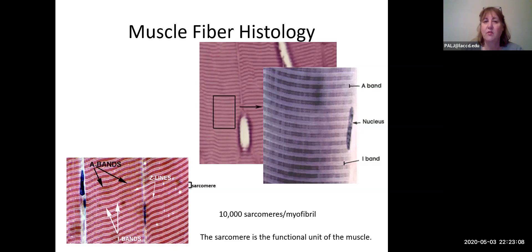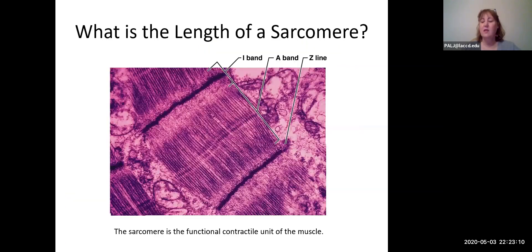Here is what I want you to do next. This is an electron microscope picture labeled with an A band, I band, and Z line. I want you, only using the words A bands and I bands, don't tell me about Z lines, to define the length of a sarcomere.